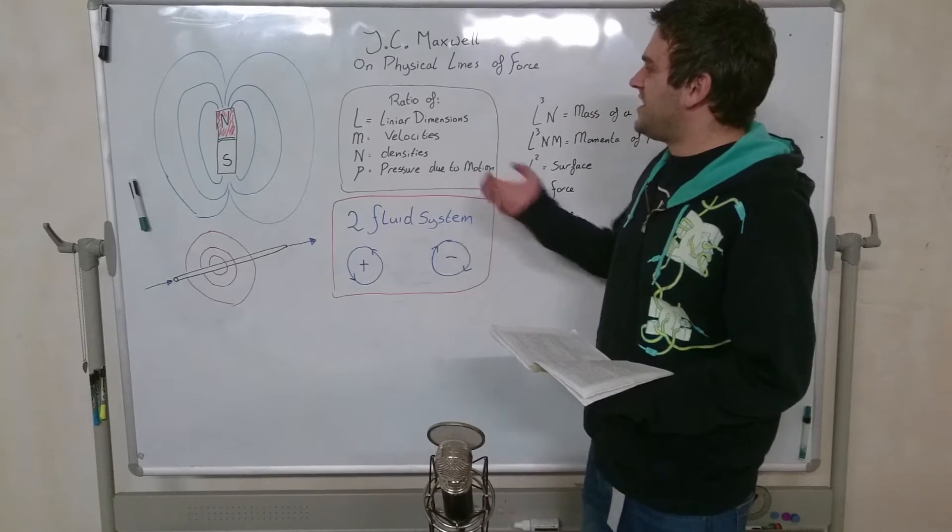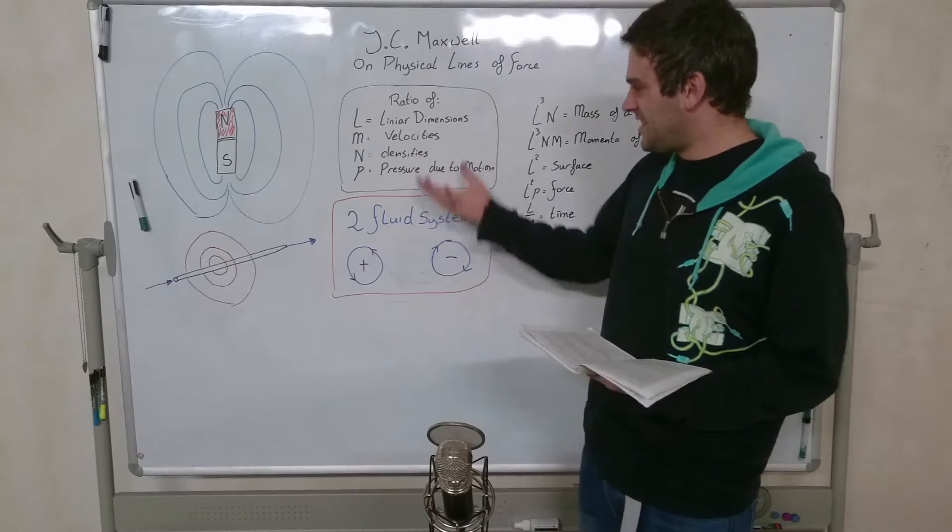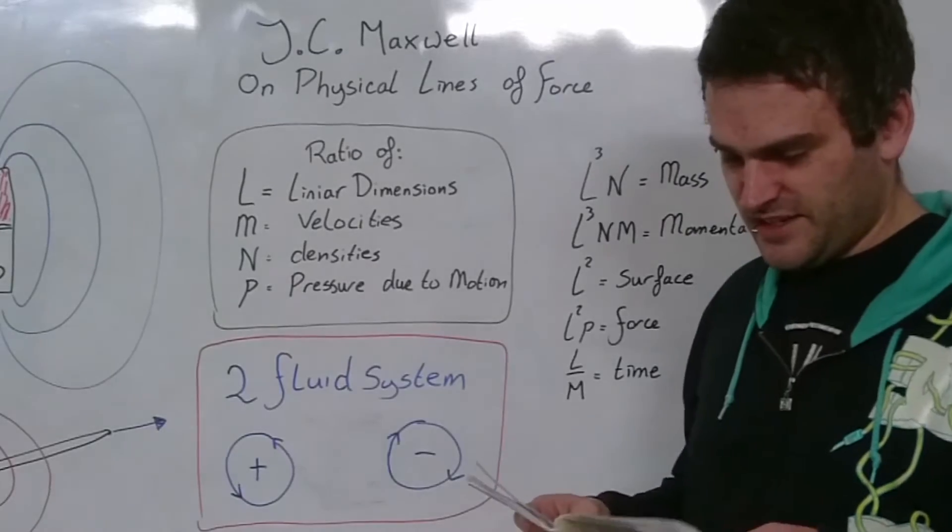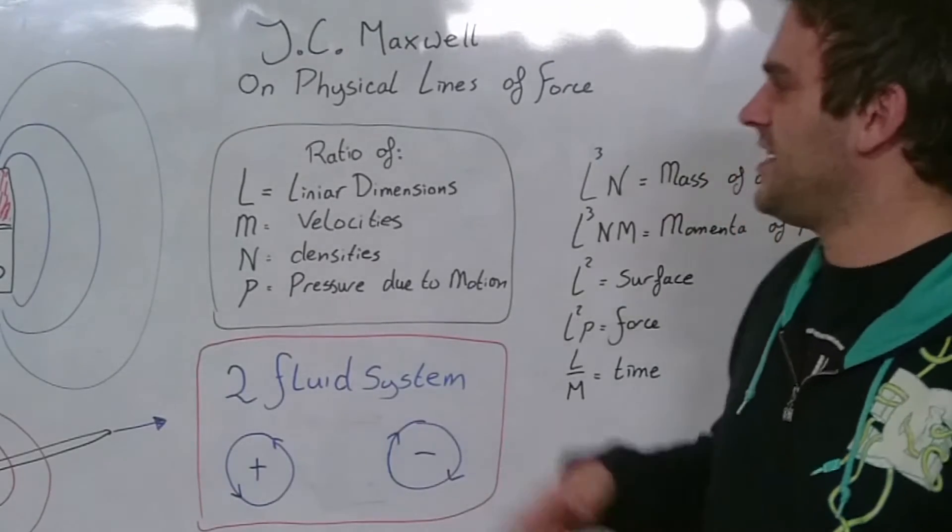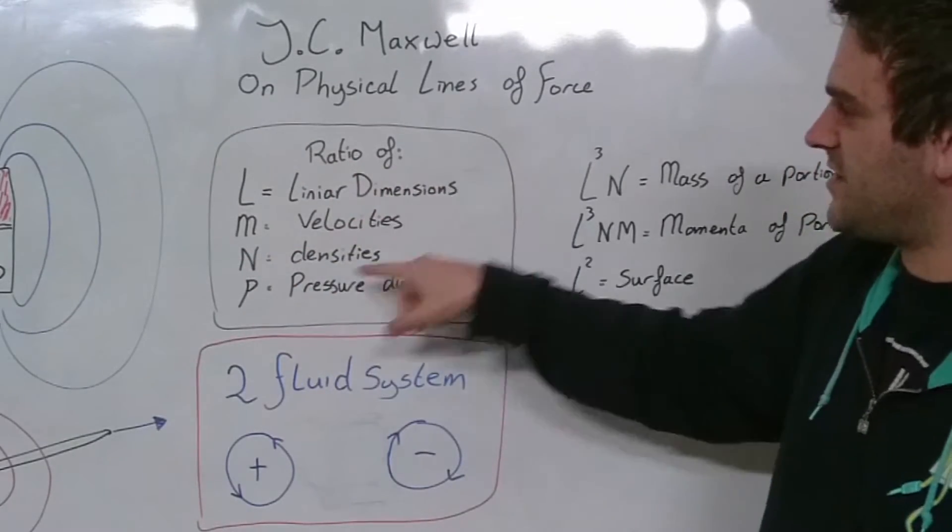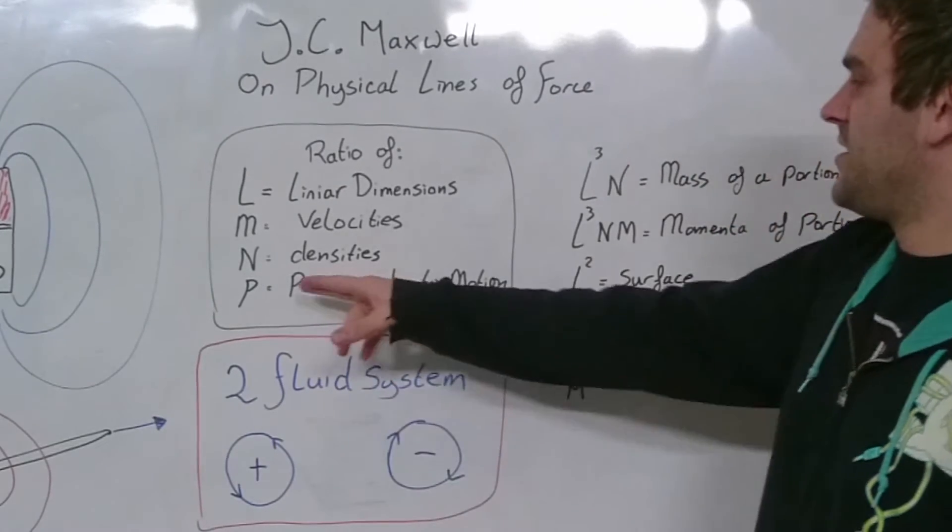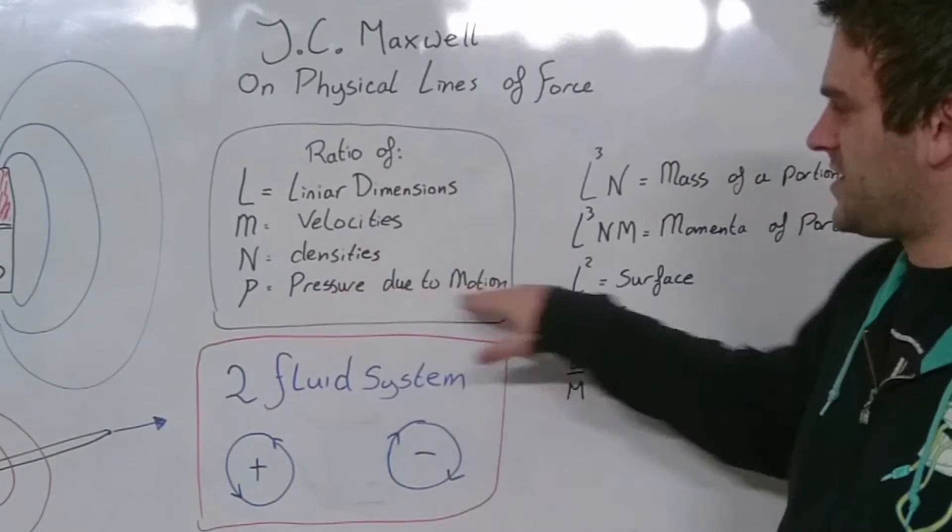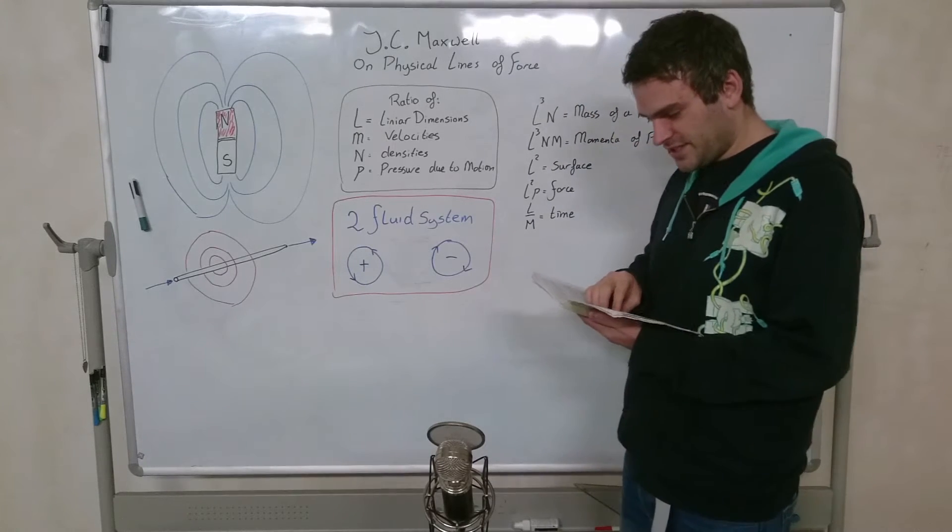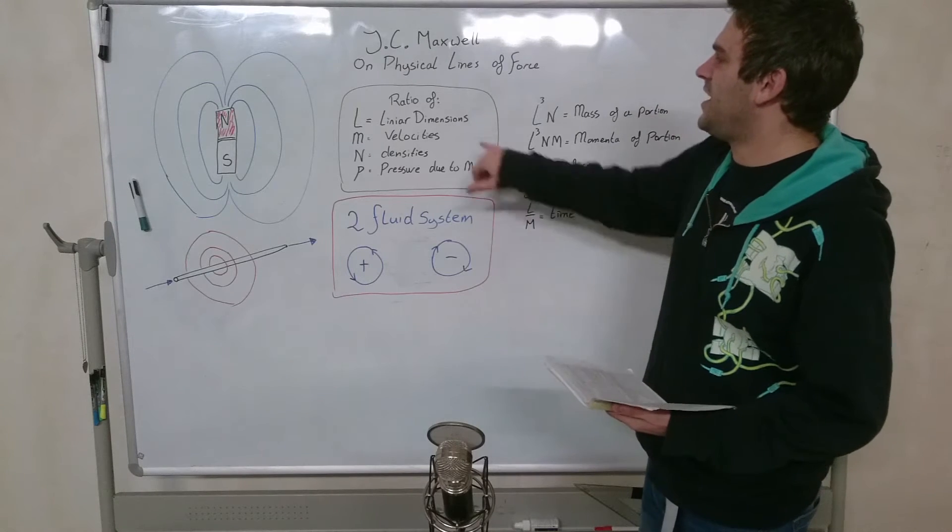It's all about the ratio. The ratio of the linear dimensions, the ratio of velocities, of the densities and the pressure due to the motion. Let L be the ratio of the linear dimensions. Let M be the ratio of velocities. Let N be the ratio of densities and let P be that of the pressure due to motion. Then the ratio of the masses of the corresponding portions will be L cubed times N.